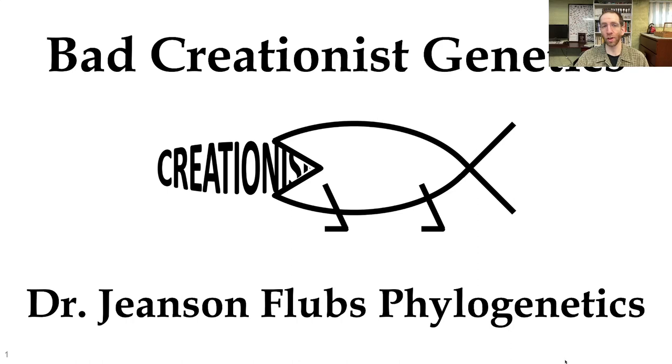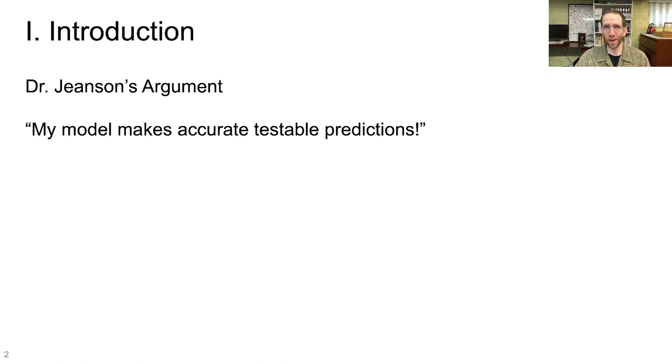To review a little bit, Dr. Nathaniel Jeanssen is a Harvard-trained PhD in cell and developmental biology. He's a young earth creationist who works for Answers in Genesis and he recently, as of this recording in the summer of 2022, put out a book called Traced on the history of humanity as told through the Y chromosome and how that history lines up with AIG's version of the young earth creationist timeline.